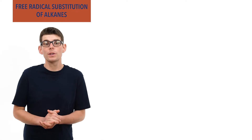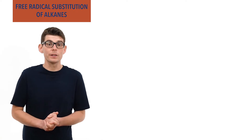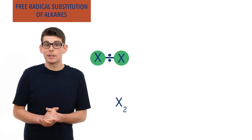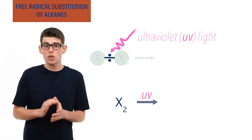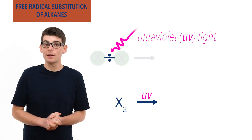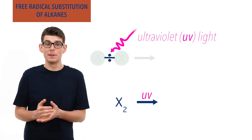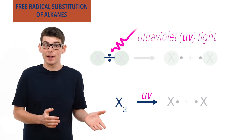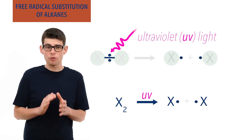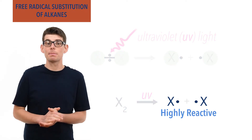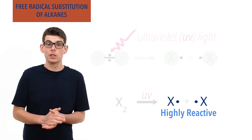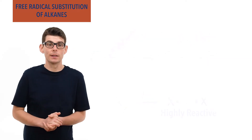To form a chlorine or bromine radical, ultraviolet light is used. The ultraviolet light can provide just the right amount of energy needed to homolytically break the covalent bond in a chlorine or bromine molecule, producing two radicals. These radicals are incredibly reactive and can end up being substituted into an alkane molecule, forming a halogenoalkane and hydrogen halide.